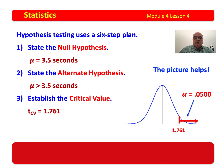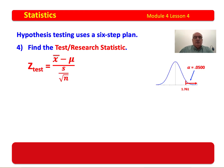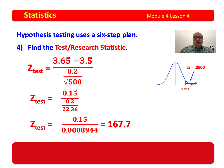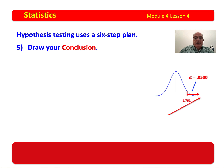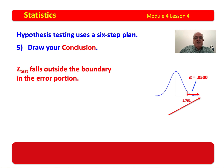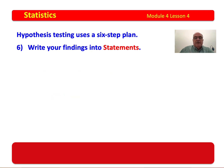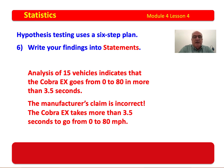We draw the picture because the picture helps. We find the test statistic using that formula, solve it as before, and get a value of 167.7, which falls way out into the reject region. We draw our conclusion: the test statistic falls outside the boundary in the error portion, so we reject H-naught. Written findings: the analysis of 15 vehicles indicates that the Cobra EX goes from 0 to 80 in more than 3.5 seconds, and the manufacturer's claim is incorrect — the Cobra EX takes more than 3.5 seconds to go from 0 to 80 miles per hour.